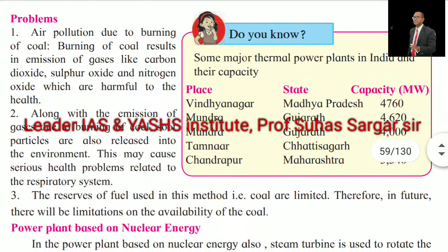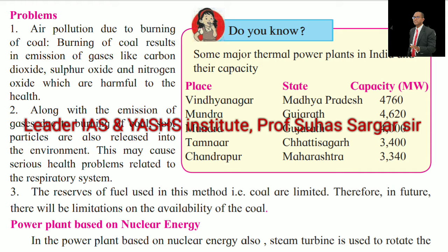Problems with thermal power: Air pollution is due to burning of coal. Burning of coal results in emission of gases like carbon dioxide, sulfur dioxide and nitrogen oxide, which are harmful to health. Along with the emission of gases, soot particles are also released into the environment. This may cause serious health problems related to the respiratory system. The reserves of coal are limited, so in future there will be a limitation on the availability of coal.